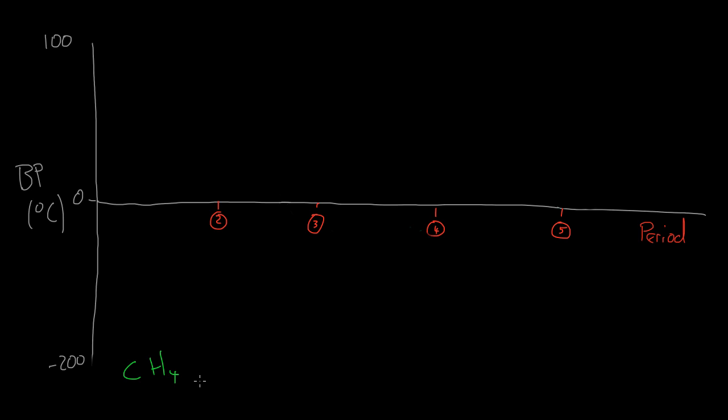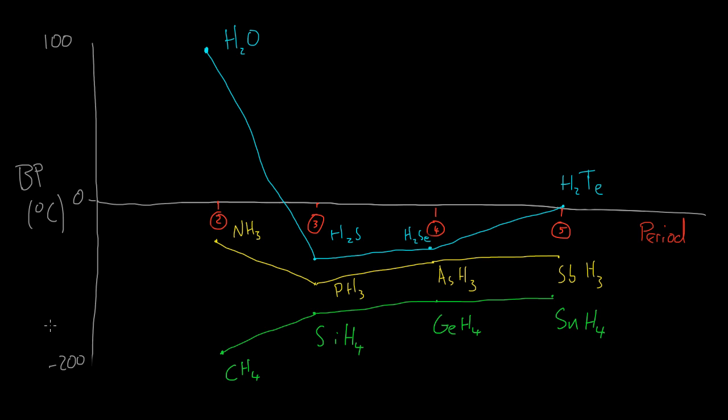So if we plot the hydrides of the elements, we can see that the group 4 hydrides show a steady increase in boiling point because the van der Waals forces increase in strength.